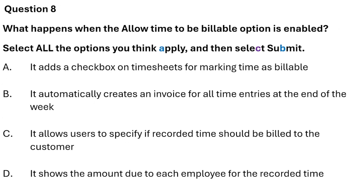Question 8: What happens when the 'Allow time billable' option is enabled? Select all that apply. Option A: It adds a checkbox on the timesheet for marking time as billable. Option B: It automatically creates an invoice for all time entries at the end of the week. Option C: It allows users to specify the amount due to each employee for recorded time. The correct answer is Option A — it adds a checkbox on the timesheet — and Option B — it automatically creates an invoice for all time entries at the end of the week.